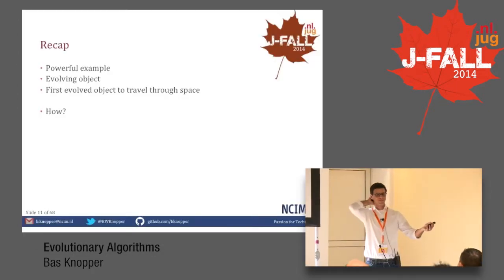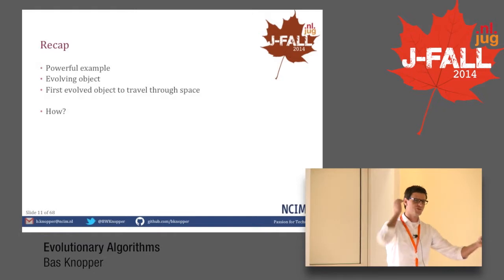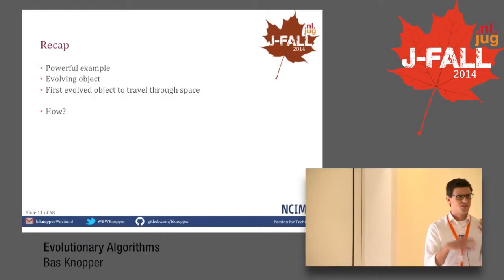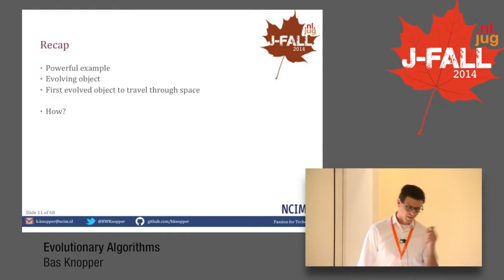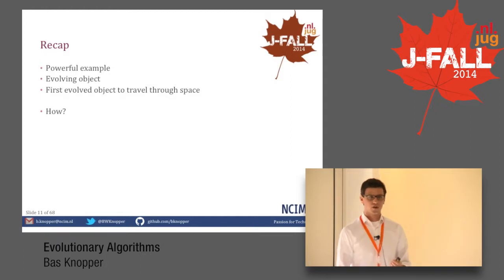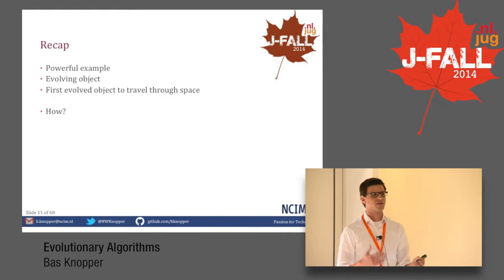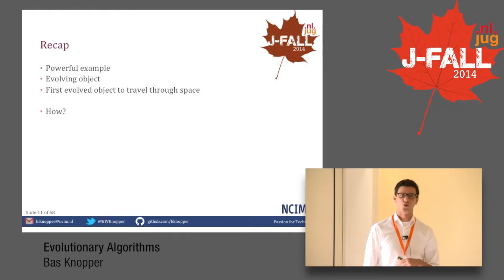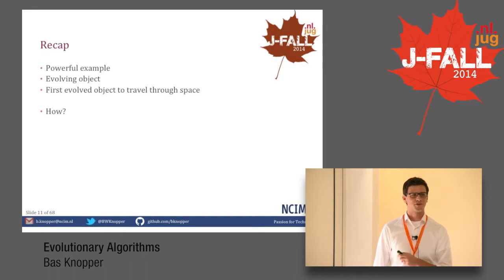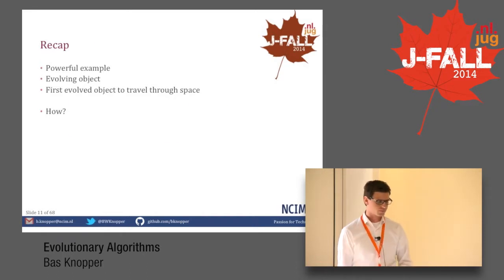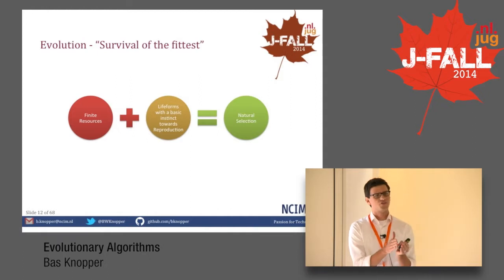So that was pretty awesome. They developed this antenna using evolutionary algorithms and you can see the generations creating new designs. It's a powerful example, and I can tell you it actually traveled through space. So how did they do this? Obviously with an evolutionary algorithm — they used evolution. I want to briefly get into a bit of theory about evolution and then head on to a use case.